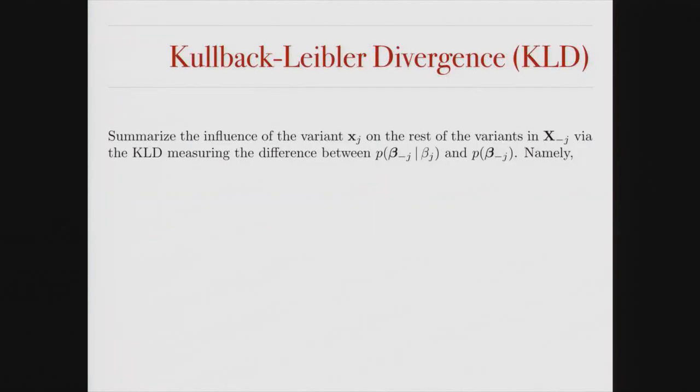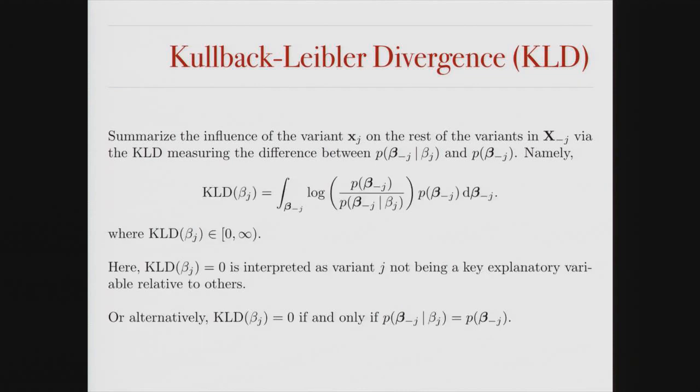We can iteratively cycle through each of our variables and figure out how much information in my posterior is lost without each person being in the data. We do this via KL divergence. We study the marginal distribution of my variables having marginalized out the variable of interest, versus the conditional distribution with that variable set to zero. If the KL divergence between these two distributions is zero — the idea of like the KL divergence is zero — that's interpreted as that variable or topological summary statistic not being a key explanatory variable relative to the others.